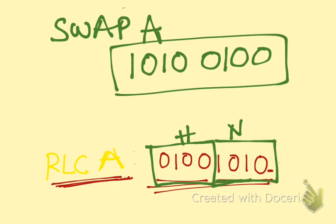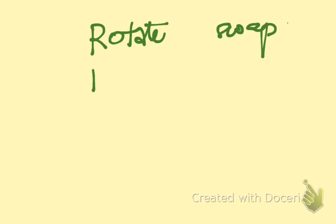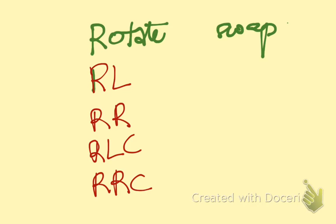I think you're now clear on how the different operations of rotation and swapping take place. We have rotate and swap. In rotate, we have seen rotate left and rotate right, and we have also seen rotate left with carry and rotate right with carry. Finally, we have seen the swap operation. This is how the rotate and swap operations work in a microcontroller language — I have taken the 8051 microcontroller as the base. I hope you found this video helpful and informative. If you have an exam tomorrow, all the very best. Thank you and have a lovely day.